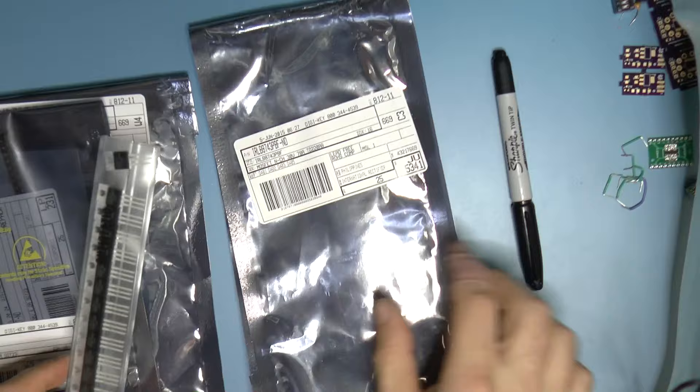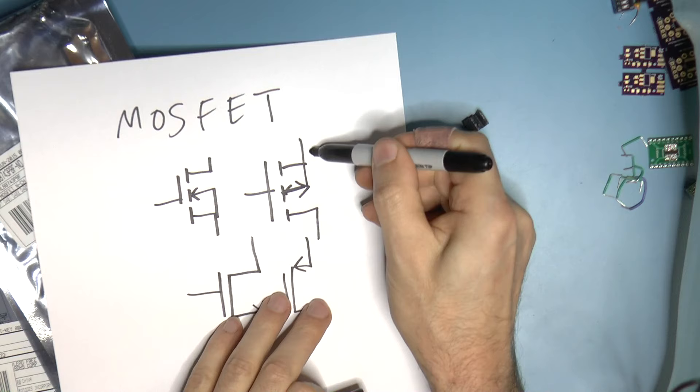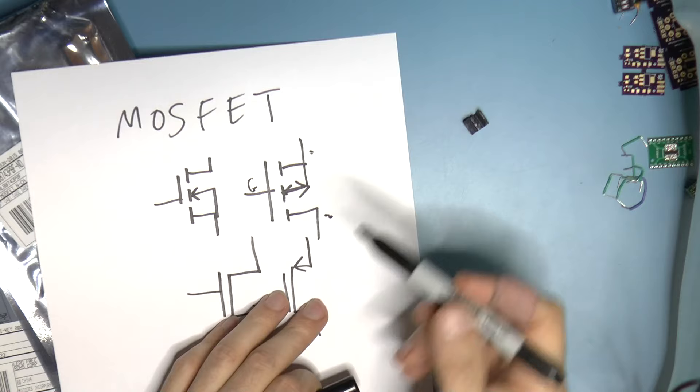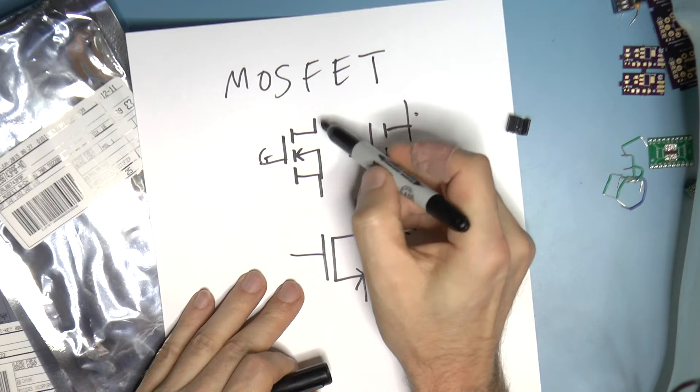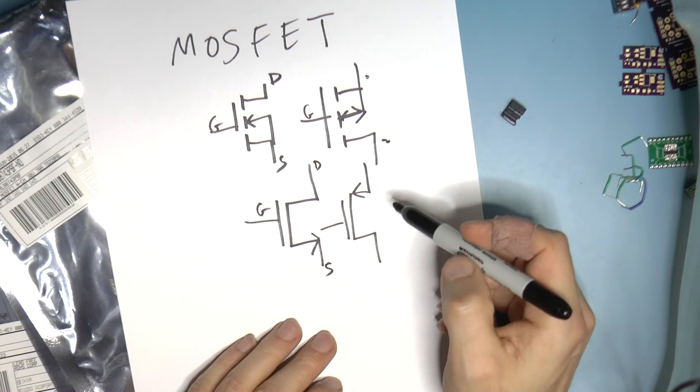30 volts basically means the amount of voltage the MOSFET can take between its two main electrode terminals. This is the gate and these are the electrode terminals. Typically it is oriented so you would have the gate, the drain, and the source. For some other MOSFETs it's actually reversed, where there's the source up here and the drain up here.